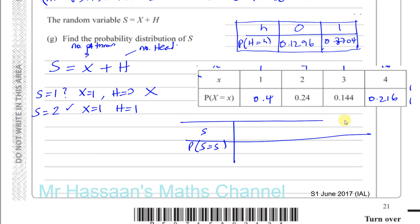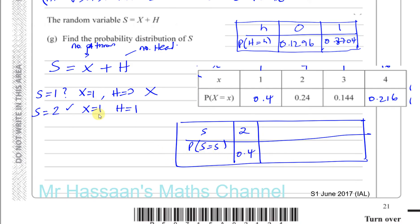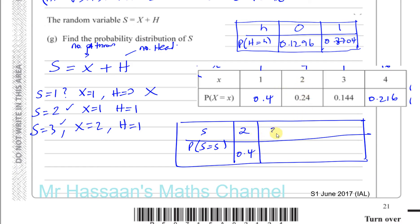S equals 2 is when you have one throw and one hit — X equals 1 — so the probability is 0.4. For S equals 3, that's when you have two throws and one hit (X equals 2, H equals 1). You can't have X equals 2 and H equals 0 because you'd have to keep going. So the probability of S equals 3 is 0.24.